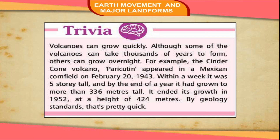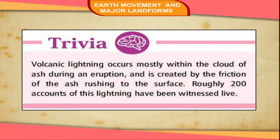By geology standards, that's pretty quick. Trivia: Volcanic lightning occurs mostly within the cloud of ash during an eruption and is created by the friction of ash rushing to the surface. Roughly 200 accounts of this lightning have been witnessed live.